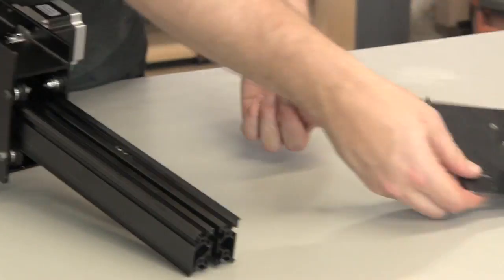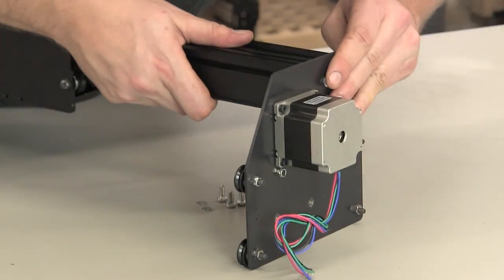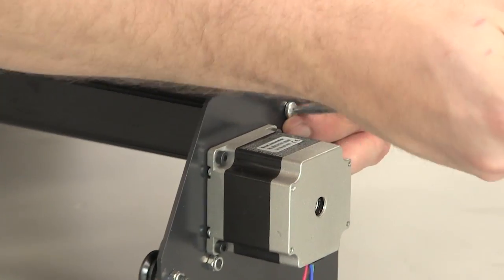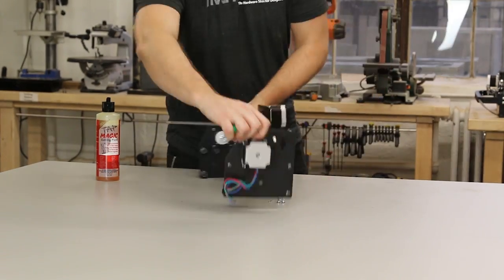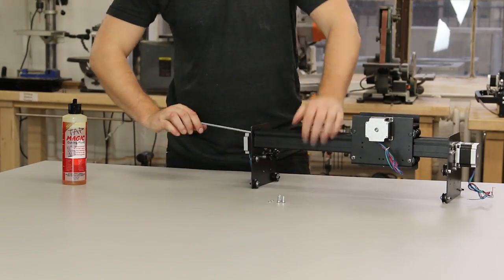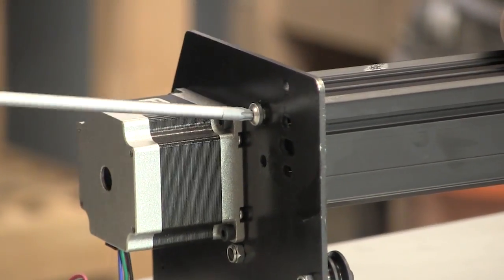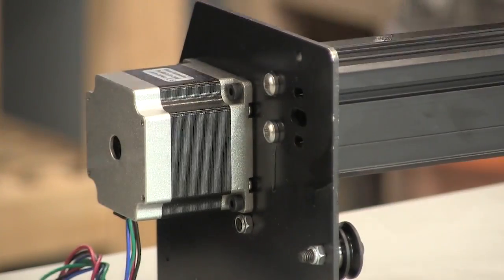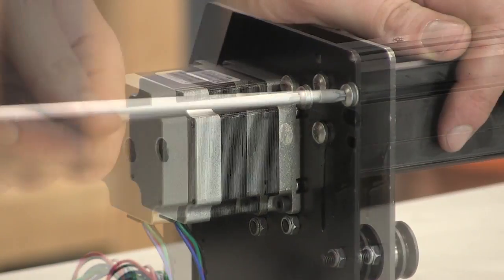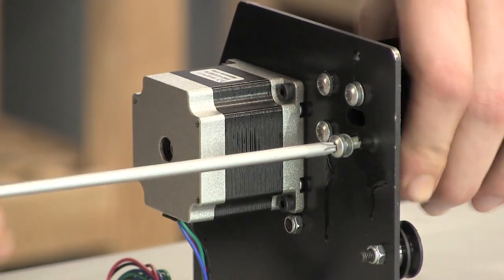And now we'll just repeat the same procedure that we used on the other Y-motor mount plate to complete the gantry. Be sure you put the washer on the self-tapping screw for the back piece of maker slide.